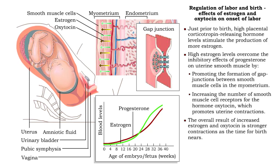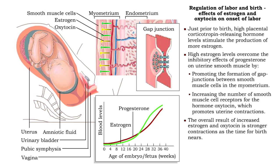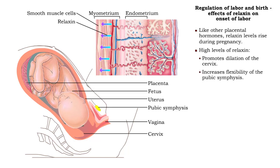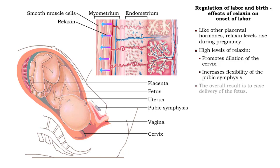The overall result of increased estrogen and oxytocin is stronger contractions as the time for birth nears. Like other placental hormones, relaxin levels rise during pregnancy. Relaxin helps to dilate the cervix and increases the flexibility of the maternal symphysis pubis.